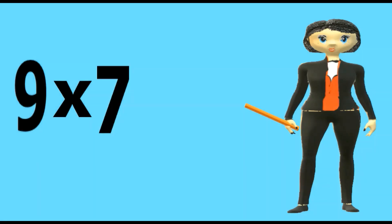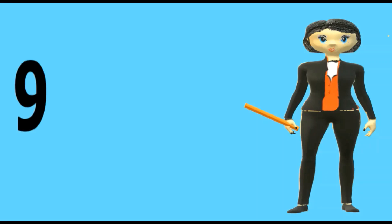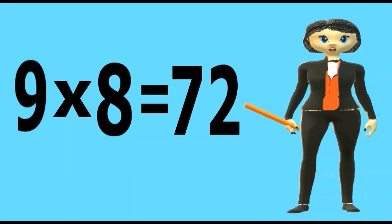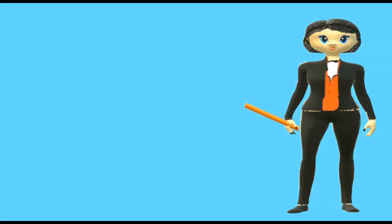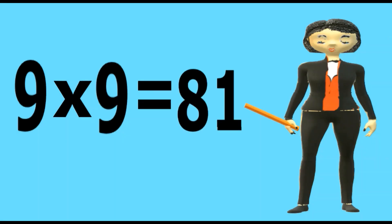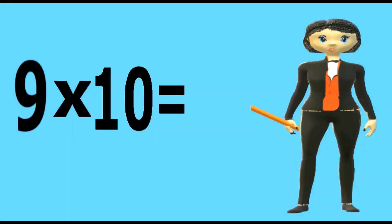Nine sevens are sixty-three. Nine eights are seventy-two. Nine nines are eighty-one. Nine tens are ninety.